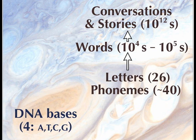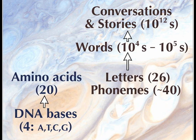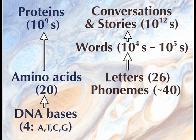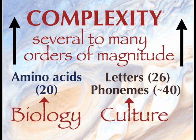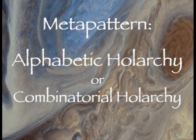Now look at biology. Four DNA bases — the As, Ts, Cs, and Gs — in triplets code into 20 amino acids. These 20 amino acids are structured into proteins in a protein universe, of which there are estimated to be tens of billions to a trillion or more. It's interesting that the level of amino acids and the letters or phonemes of the alphabet of language both are numbers that build into huge amounts of complexity. This meta-pattern I call the alphabetic holarchy, or perhaps the combinatorial holarchy, because it depends on combinations of elements into various patterns that build into still larger patterns.